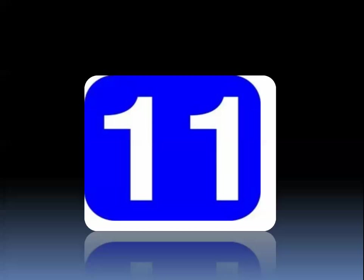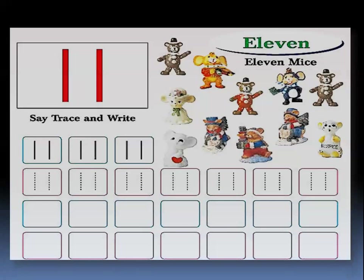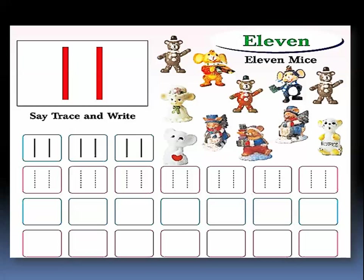Today we are gonna learn a new number. This number is number 11. Number 11 comes after number 10, so after 10 comes number 11. Let's count these mice: 1, 2, 3, 4, 5, 6, 7, 8, 9, 10, 11. These are 11 mice. Number 11 consists of two numbers: 1 and 1.